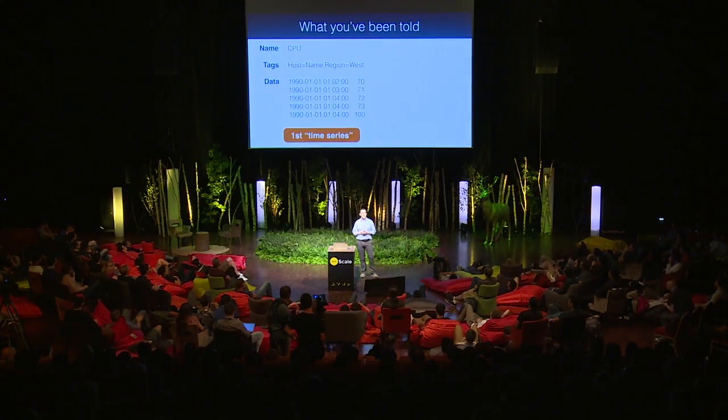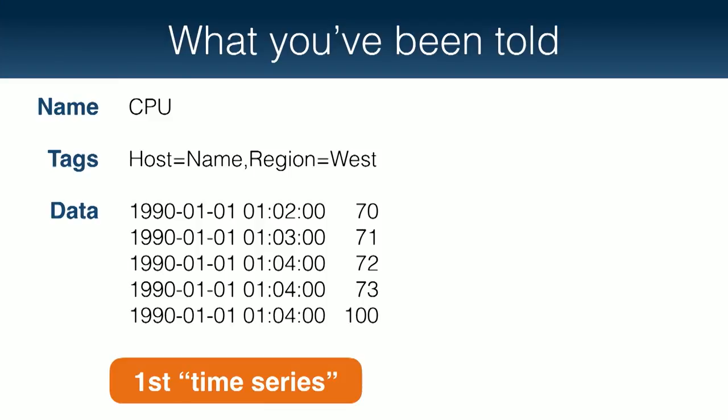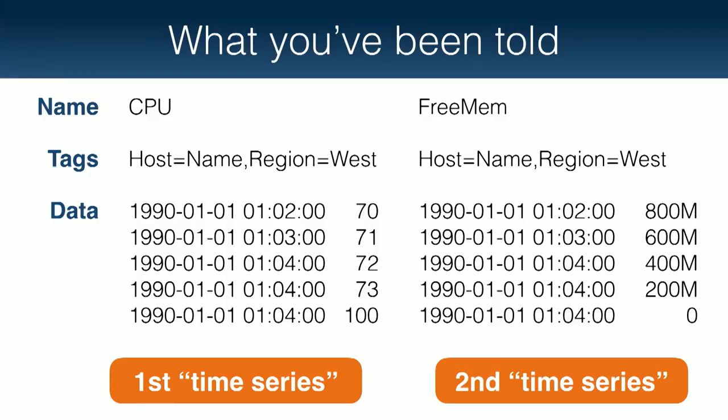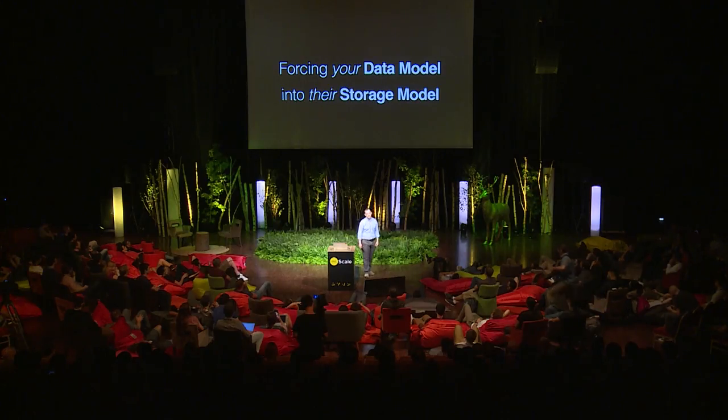One thing you've heard is that time series has a very specific format: a name with a bunch of tags and data that looks like a timestamp and a value. You might think of this as your first time series, and sometimes people ask how many time series you have. If you want to associate CPU and free memory with the same device, you'd call this your second time series — and we argue that this is actually wrong. The reason it's wrong is because it says whatever data model you have, you need to map it into a very specific storage model: this narrow table format.